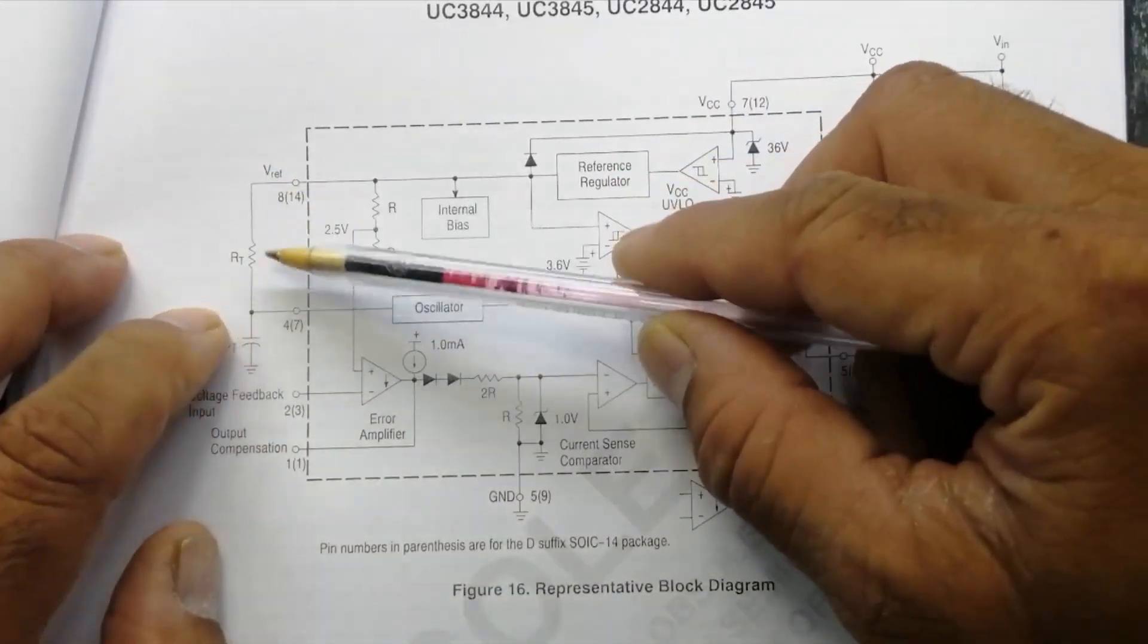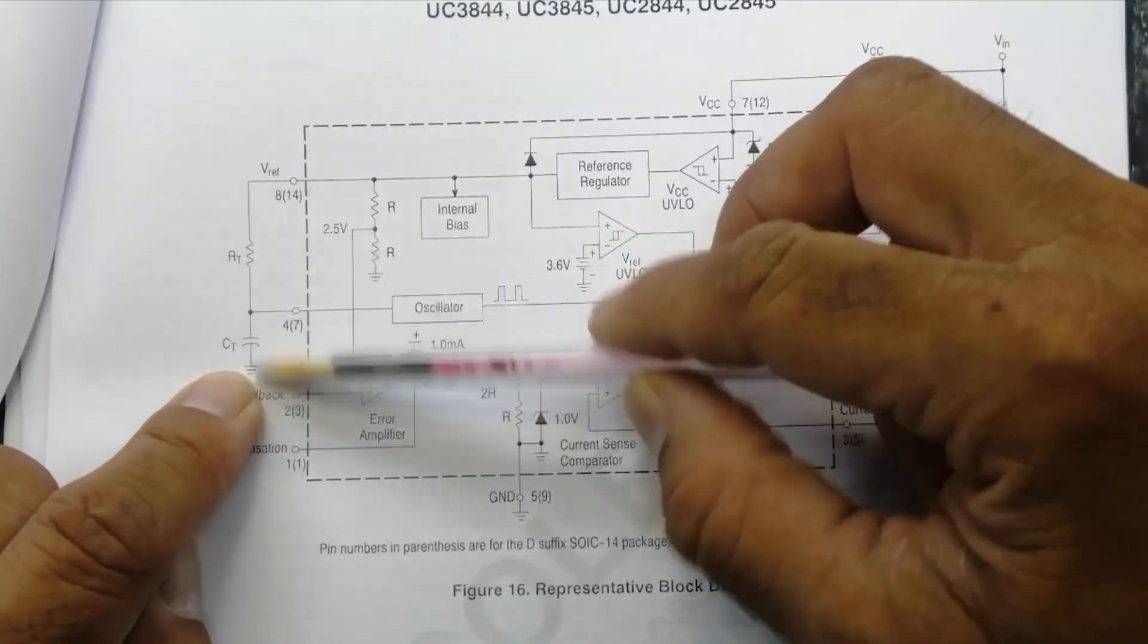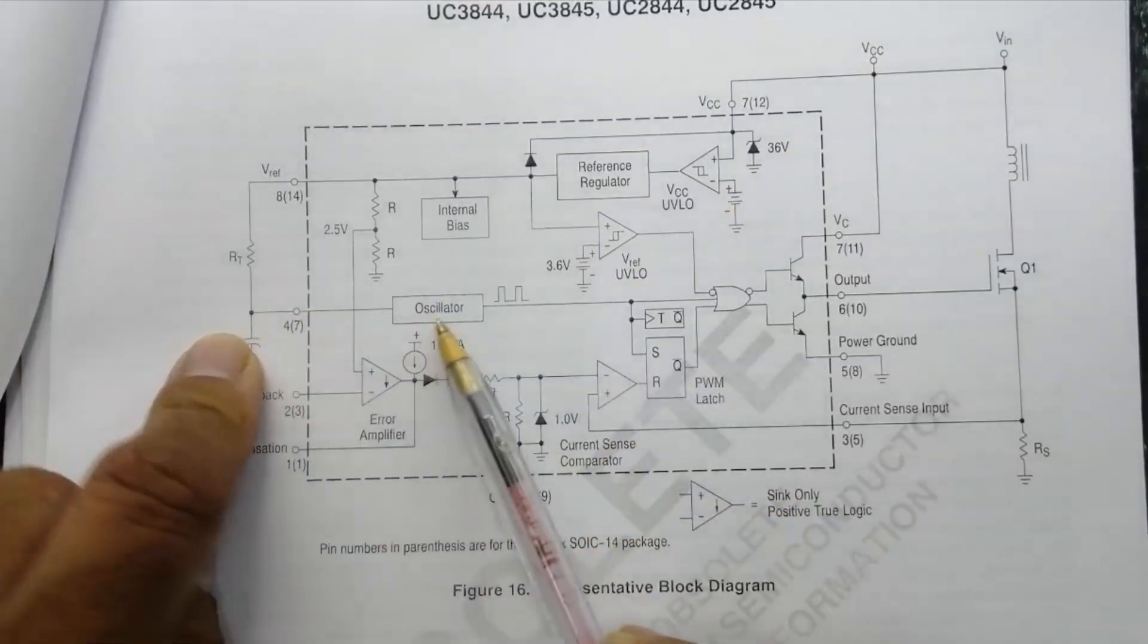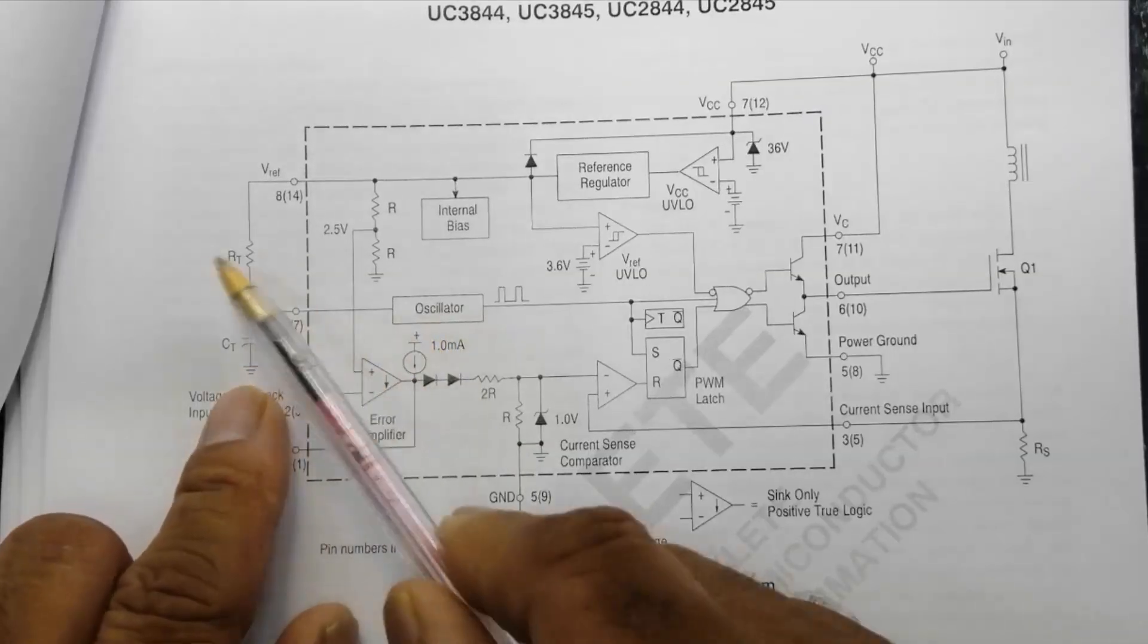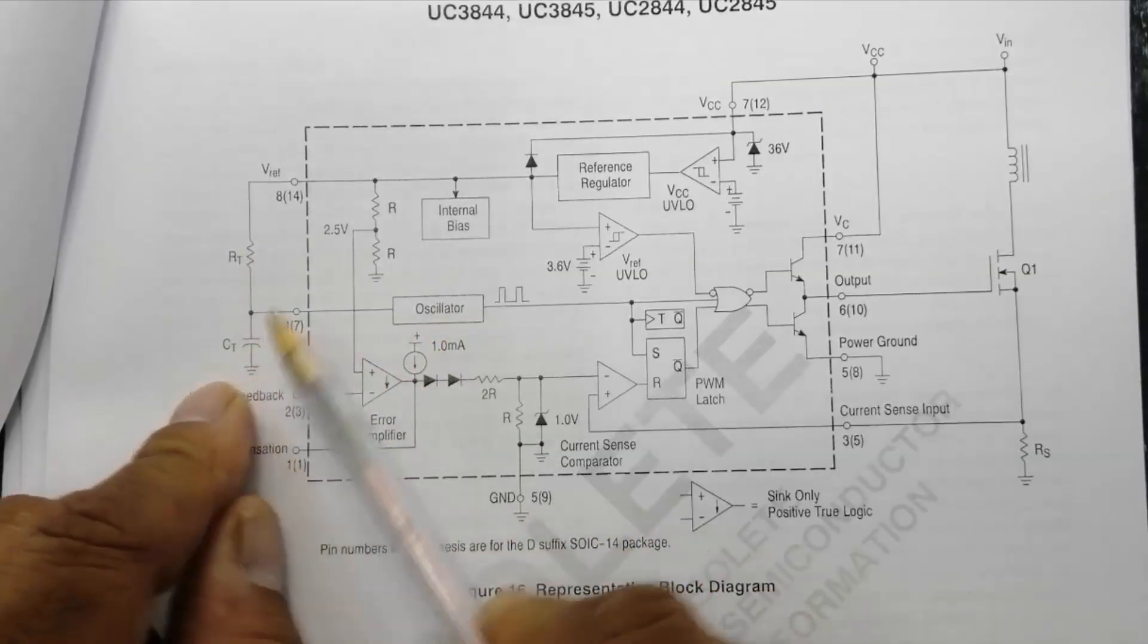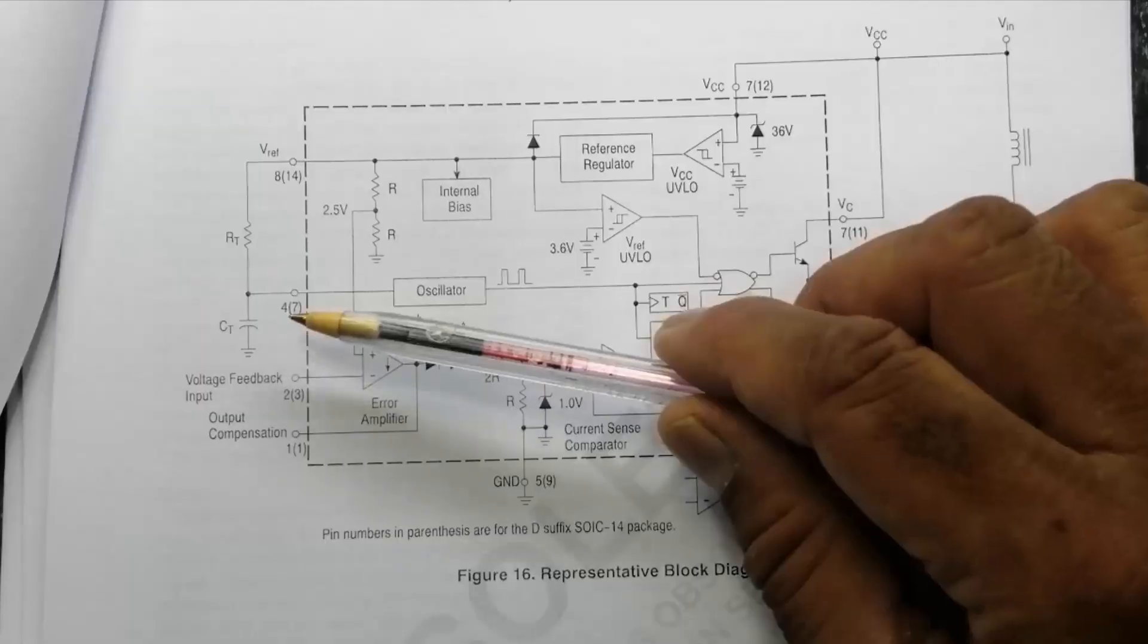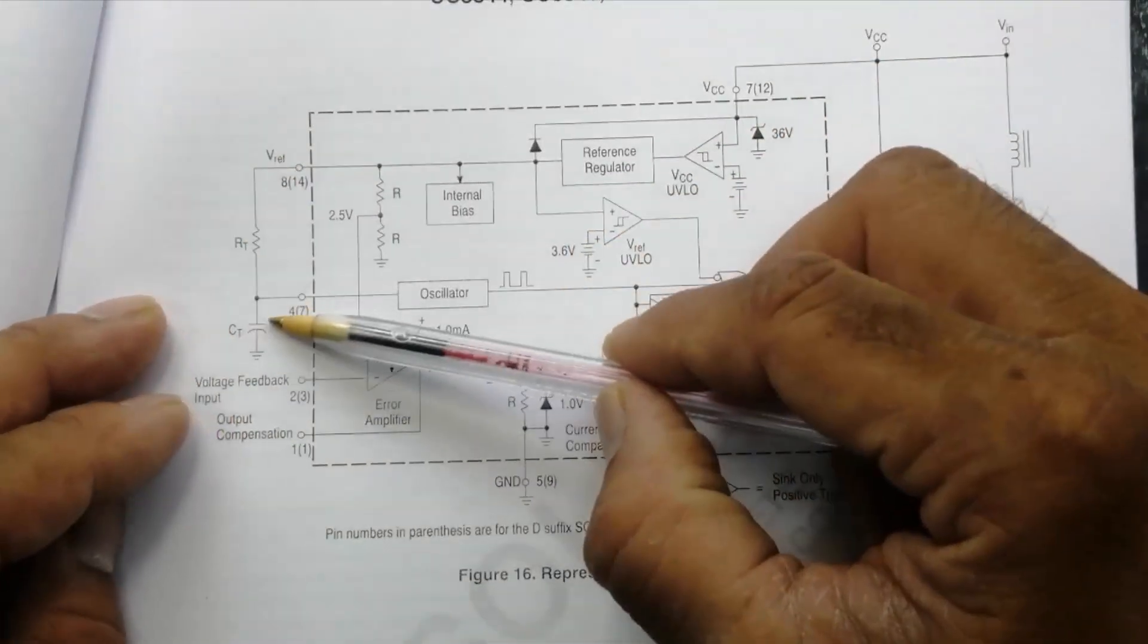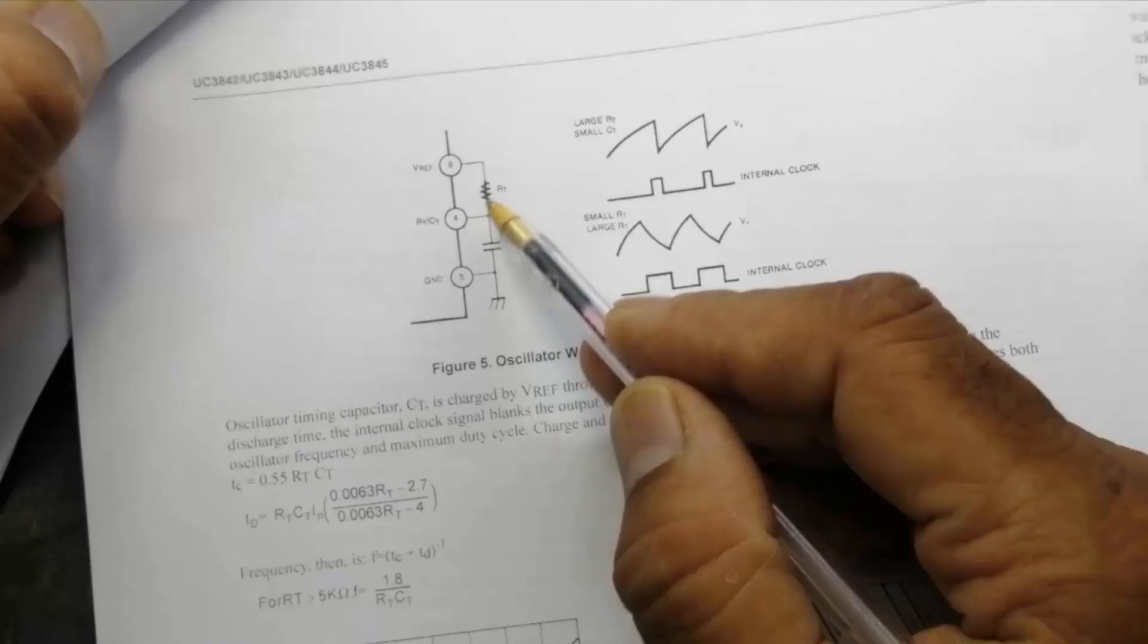V reference, RT and CT are connected here and it will go to oscillator.